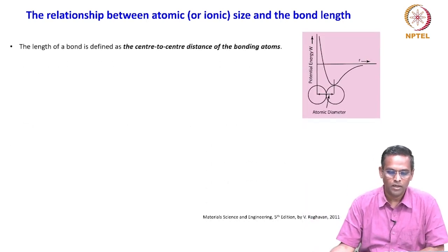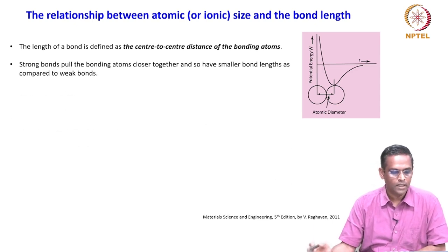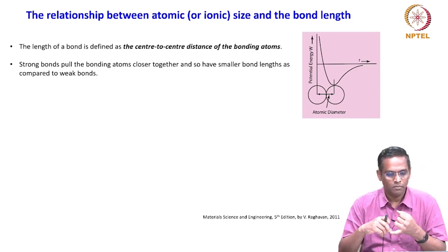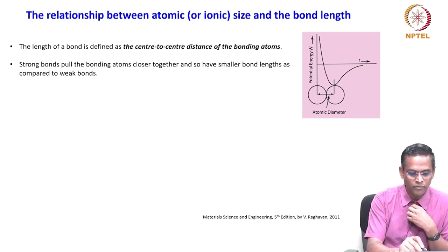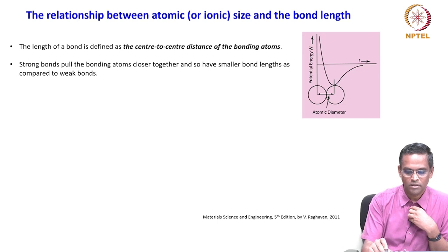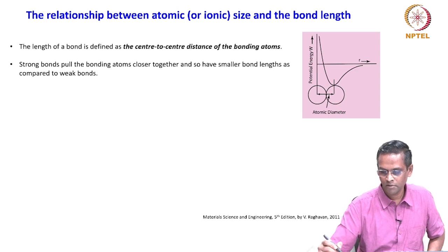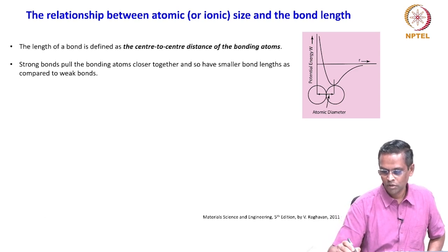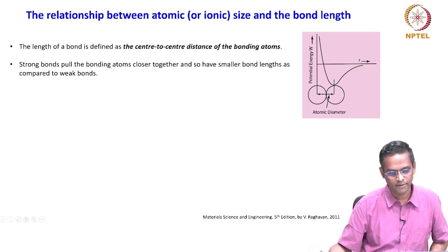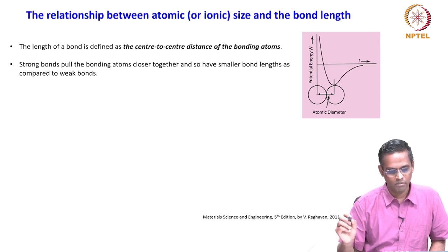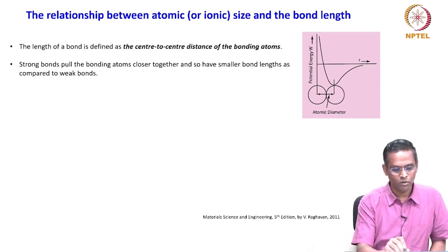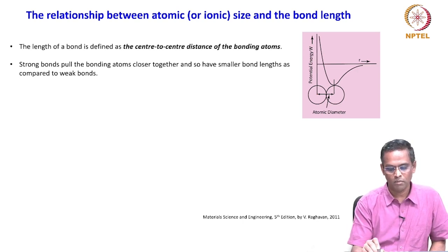The relationship between atomic size and bond length: the length of a bond is defined as the center-to-center distance of the bonding atoms. When the distance between two atoms is R₀, that center-to-center distance is called bond length. Strong bonds pull their bonding atoms closer together and so have smaller bond lengths compared to weaker bonds.